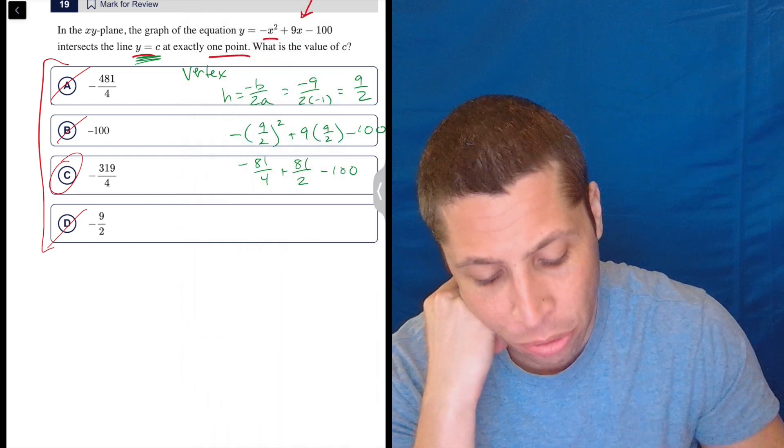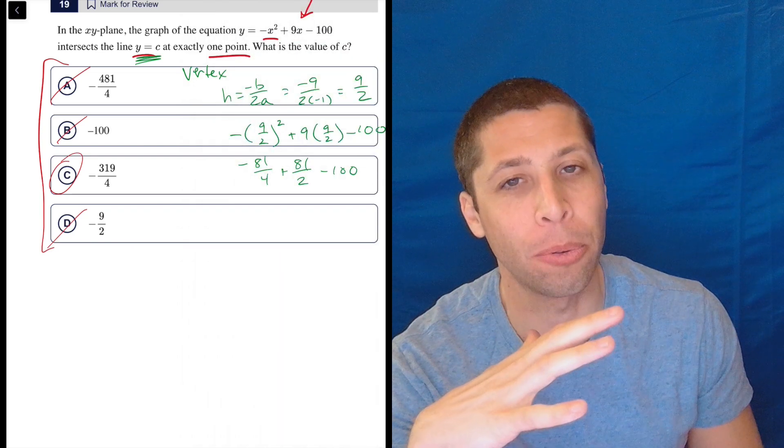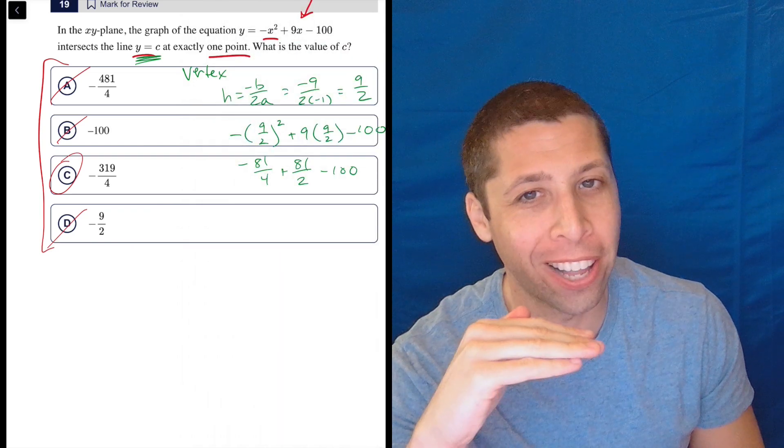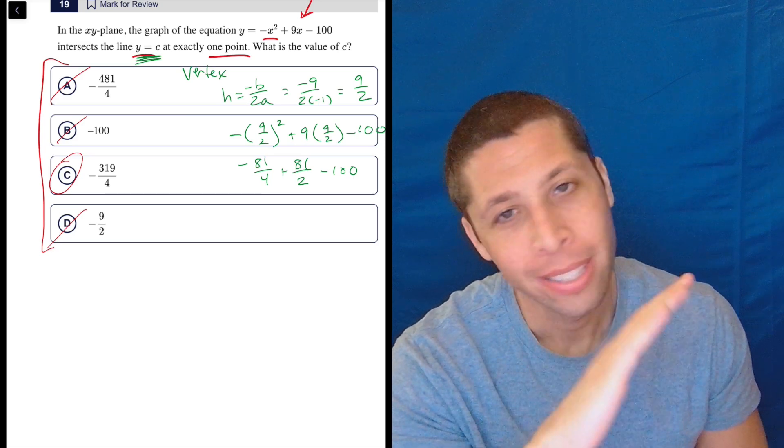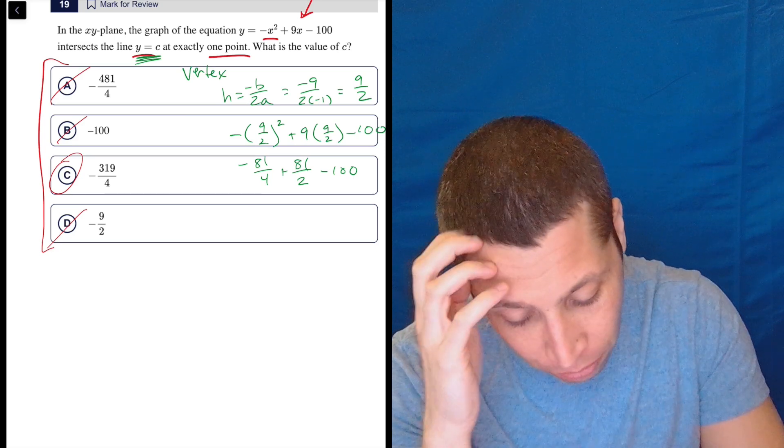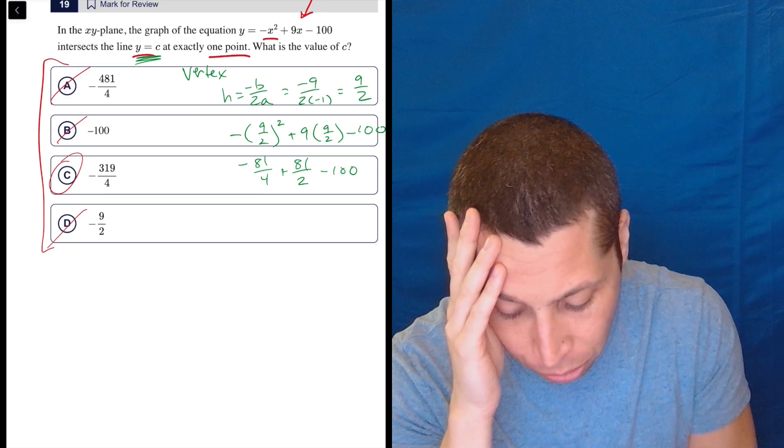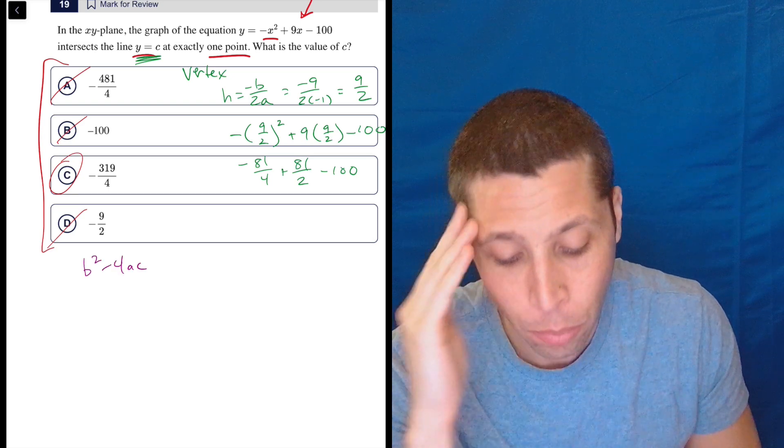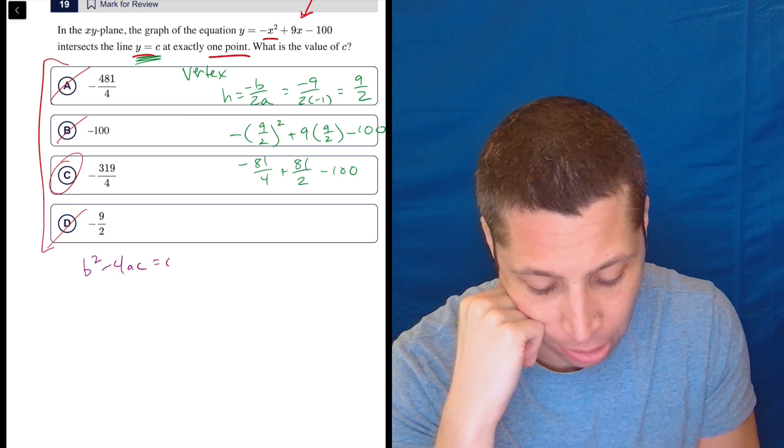But again, that doesn't always work, because here, it really has to do with the fact that it's a horizontal line. If that line had a slope, it's not going to work. So we can't use the vertex in those cases. But we can always use the discriminant, b squared minus 4ac. We want it to meet at exactly one point, so it has to equal zero.